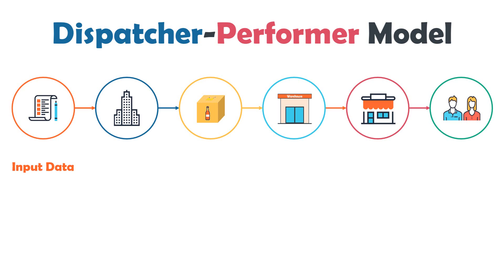The raw materials are the input data, which the dispatcher takes and gives to the performer to process. The manufacturer is the dispatcher, who creates the queue items. The packs are the queue items. The warehouse is the queue, where the queue items are stored. The supermarket is the performer that processes the queue items.